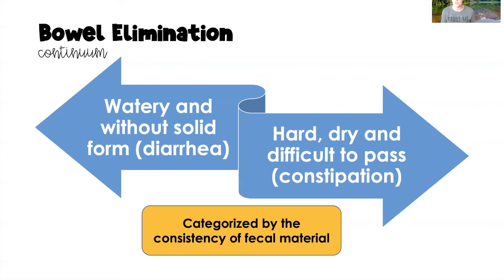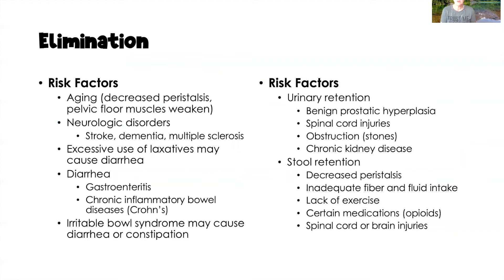When we think about risk factors, aging is a primary risk factor for both urinary and bowel elimination issues. Because of decreased peristalsis, we can see constipation problems, and as pelvic floor muscles weaken, we can see urinary incontinence problems. Neurologic disorders that can result in incontinence include stroke, dementia, and multiple sclerosis. Excessive use of laxatives can cause diarrhea, and diarrhea can also be caused by infections of the bowels such as gastroenteritis.